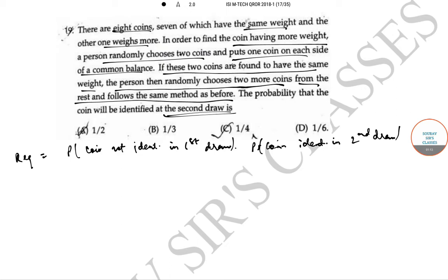So, the probability that the coin is not identified in the first draw is 7c2 by 8c2.